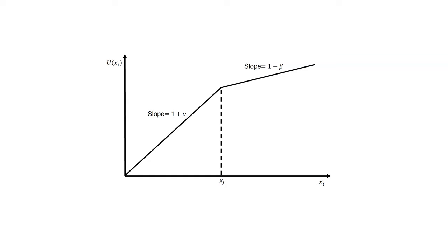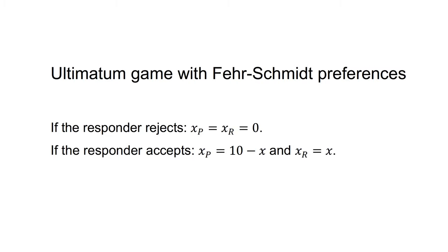We can examine the Fehr and Schmidt model in the context of the ultimatum game. Suppose two players of the ultimatum game have Fehr-Schmidt preferences. What offers X would the responder reject, where the proposer has $10 to split between them? If the responder rejects, the payoff to the proposer and responder is zero — that is, XP equals XR equals zero. If the responder accepts, the responder receives X and the proposer keeps the remainder — that is, XP equals 10 minus X and XR equals X.